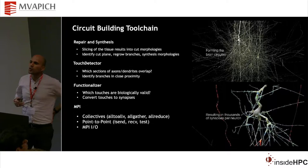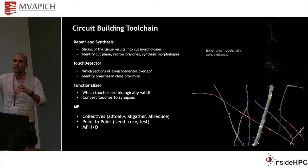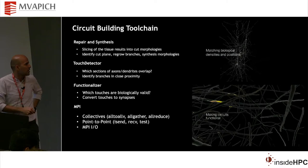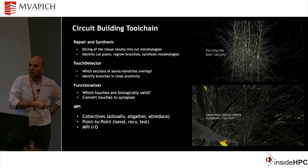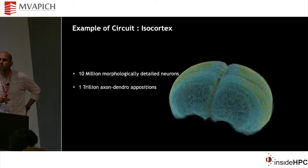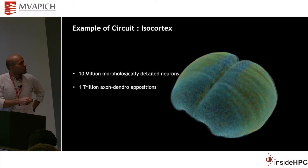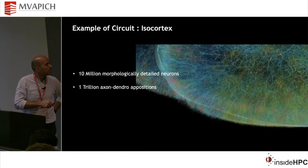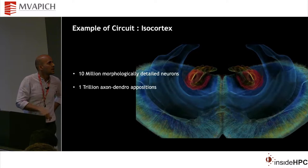The algorithms used in this process are not static — the number of touches in different circuits varies and grows based on cell densities and other factors. I'm highlighting here the key MPI routines we need in this tool chain. Once you have the circuit-building tool chain complete, what you get is a tissue of the brain — for example, an isocortex circuit of 10 million neurons that we built about six months ago, with 10 million unique morphologies and trillions of axo-dendritic appositions, which are the connections between neurons.